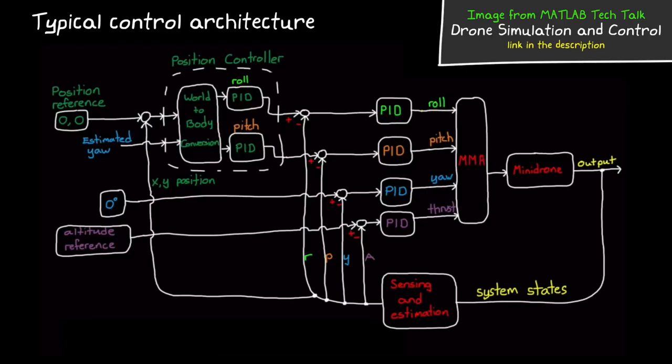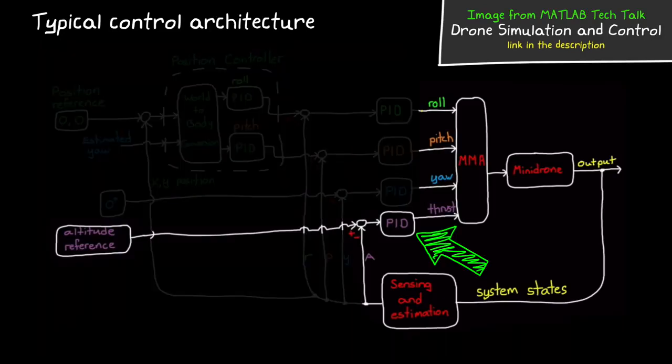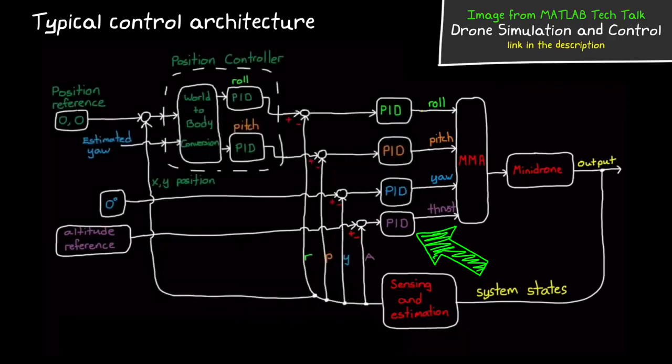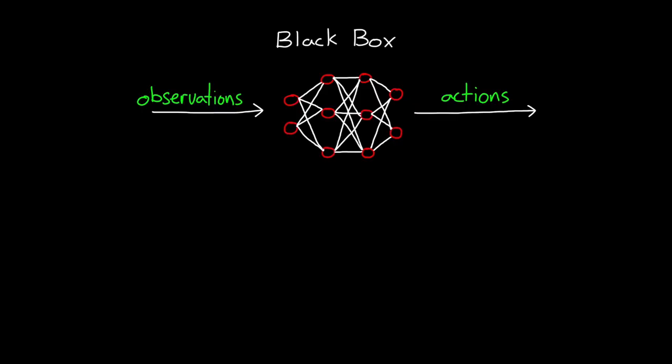Think about how gains might be derived from physical properties like appendage lengths or motor constants, and how simple it is to change those gains if the physical system changes. In addition, if the system doesn't behave the way you expect, with a traditional design you can often pinpoint the problem to a specific controller or loop and focus your analysis there. You have the ability to isolate a controller and test and modify it standalone to ensure it's performing under the specified conditions and then bring that controller back into the larger system.